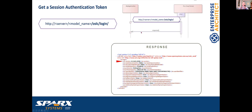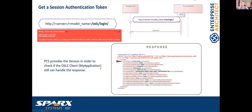The version number is really important because the application we are implementing assumes we get specific response data like RDF XML, and in future versions something can change. For example, WebEA expects a Pro Cloud Server OSLC implementation version 4.2.62100, but the current Pro Cloud Server has a newer version 4.2.65 2250. It's still working but it's a warning that it may be better to update, because something could not work as expected.